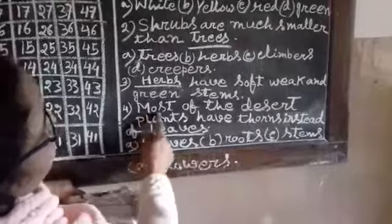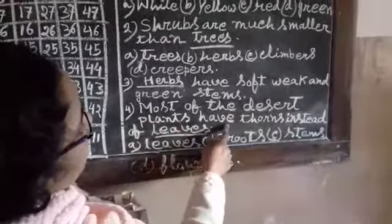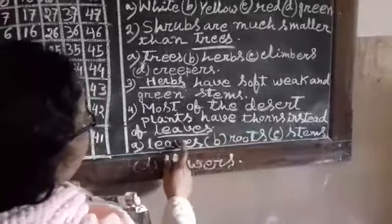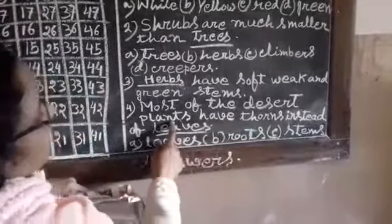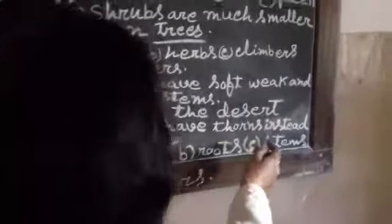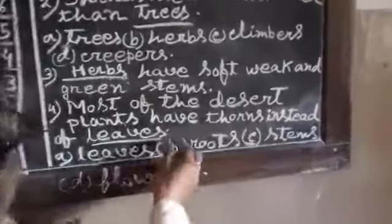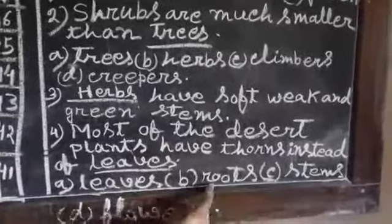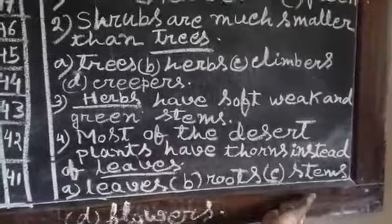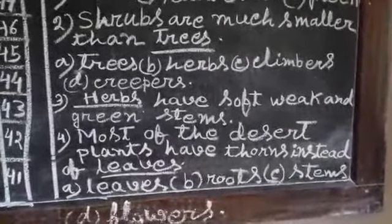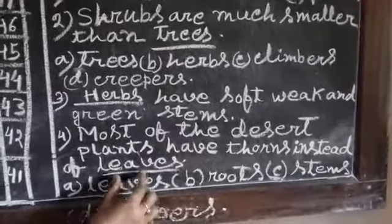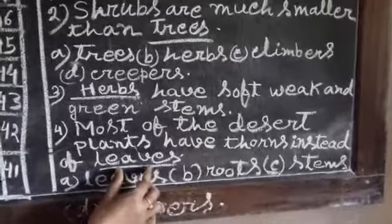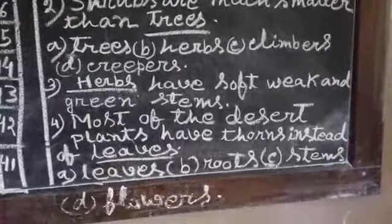Most of the desert plants have thorns instead of leaves. The parts of a plant include leaves, roots, stems, and flowers.